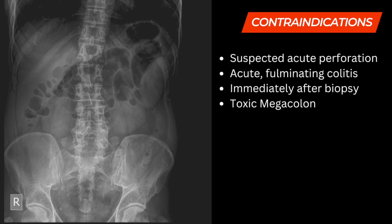Before we start talking about how to do this test, we must know the contraindications of this procedure. It's always useful and very important to take a standing X-ray of the abdomen before you start, to rule out acute perforation by confirming there is no gas under the diaphragm. You should also not do this procedure during acute fulminating colitis, after a recent rectal biopsy, or when there is large bowel dilatation and you're suspecting toxic megacolon.